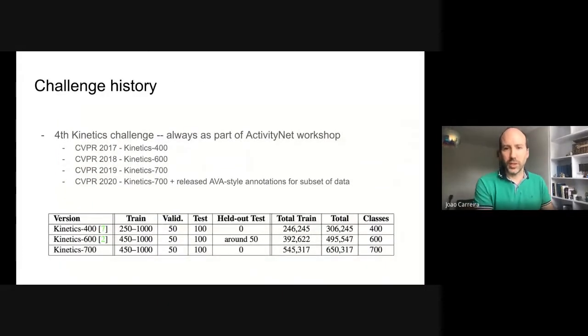This is the fourth edition of the challenge. We have collected additional data each year. Initially, we enlarged the number of classes and clips, from 400 classes and 250,000 training examples in the first year, to 600 classes and 400,000 training examples in the second year, until 700 classes and 550,000 examples last year. This year, we reused the dataset from last year, which we call Kinetic 700, and have collected instead new AVA-style annotations for a subset of the videos, bounding boxes for one frame in each video, with multiple atomic labels for each person.